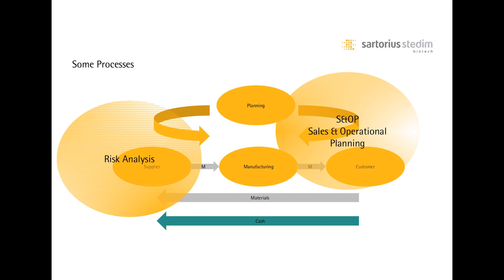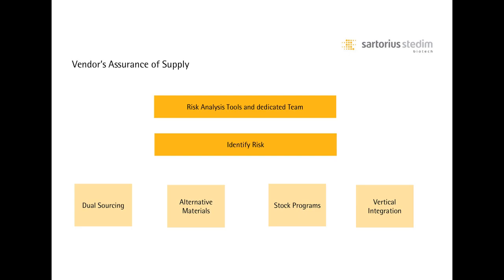In Sartorius, a dedicated team supported by specific software executes risk analysis and assessment for all our critical components and vendors. When a risk of supply disruption and its impact has been identified, we define the best solution for removing or mitigating that risk. Typical solutions can be dual sourcing, tools duplication, alternative materials, stock programs, or vertical integration. Assurance of supply based on a risk analysis approach is a best practice for assuring a best-in-class service level to our customers.